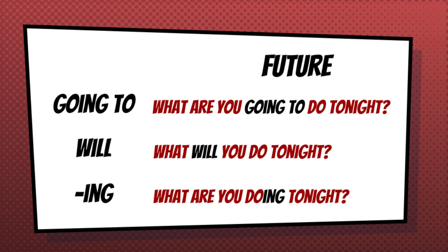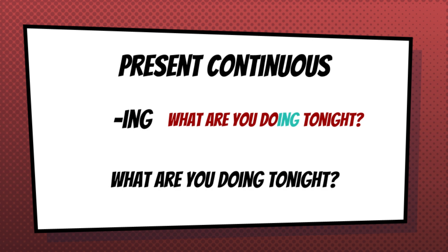Agora nós temos uma terceira forma que eu represento com -ing: what are you doing tonight? Então, temos: what are you going to do tonight? — que nós vimos na lição 10 — e what will you do tonight? Quer dizer mais ou menos a mesma coisa, só que going to é mais usado na minha experiência. E agora nós temos what are you doing tonight? Esse present continuous também pode ser usado como futuro. Como? É o contexto que vai nos ajudar.